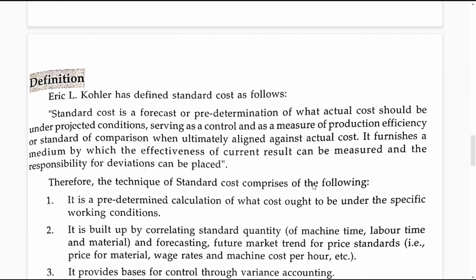Let us get into the definition given by Eric L. Kochler for standard cost. According to him, standard cost is a forecast or predetermination of what actual cost should be under projected conditions, serving as a control and as a measure of production efficiency when ultimately aligned against actual cost. It furnishes a medium by which the effectiveness of current results can be measured and responsibility for deviations can be placed.